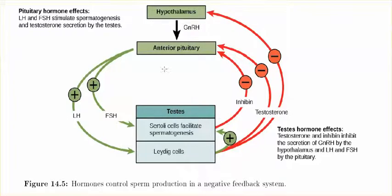Remember, gonadotropic — the gonads — trophic means to stimulate. So FSH and LH in males will accomplish two things. FSH will facilitate the process of spermatogenesis. You don't need to worry about the Sertoli cells in this class; just know that FSH stimulates the process of spermatogenesis.